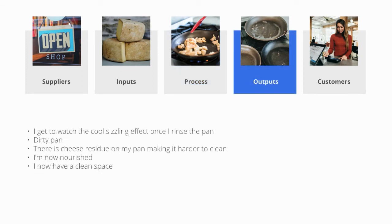Next up, Outputs. Outputs are the results of your process. Every output should be connected with at least one customer element. Our outputs here are: I get to watch the cool sizzling effect once I rinse the pan, a dirty pan, cheese residue on the pan making it harder to clean, I am now nourished, and now I have a clean space.